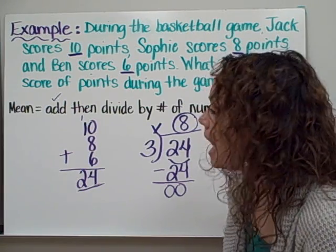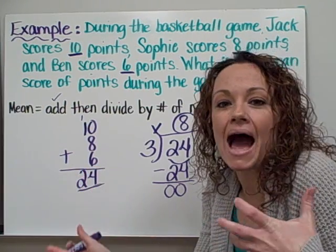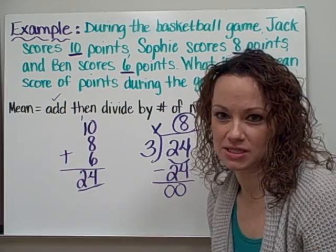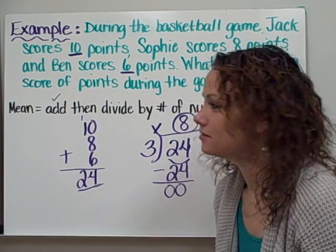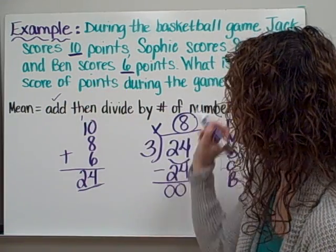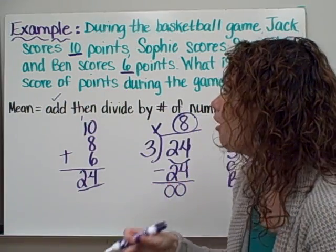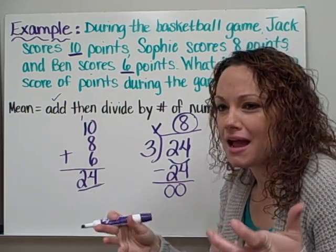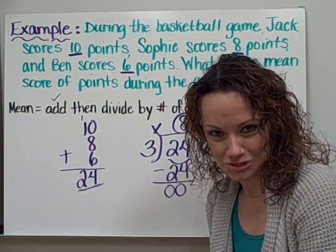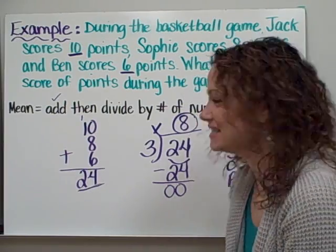Therefore, 8 is the mean number of points — the average number of points scored during the game. That means about how many points each person scored. So even though they didn't score exactly the same, altogether they each scored about 8.